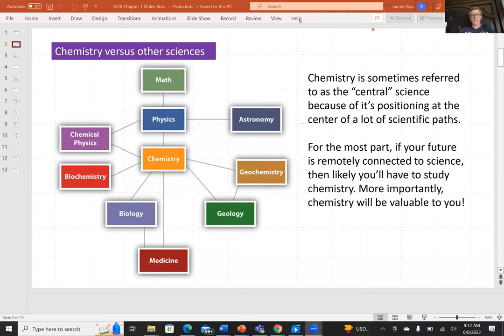Chemistry versus other sciences. Chemistry is often referred to as the central science. You can see on the diagram on the left, the central location of chemistry.